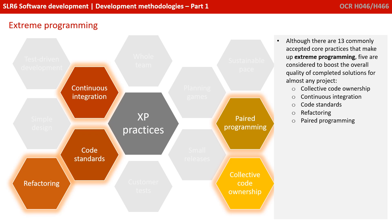There are 13 commonly accepted core practices that make up Extreme Programming, though these aren't listed in the specification. However, five are considered to boost the overall quality of almost any project: collective code ownership — everybody is in charge of the entire code base; continuous integration; high code standards; refactoring — revisiting old code and repurposing it to make it more efficient and robust; and paired programming — two programmers sat side by side at the same computer screen and keyboard, on the idea that two sets of eyes are better than one and higher quality code will be produced.